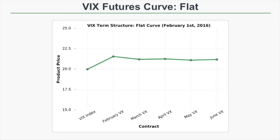In this last example we're looking at a VIX futures curve that is relatively flat. The VIX index is at 20, and from February through June the VIX futures contracts are around 21. While this is technically a contango curve since the VIX futures are higher than the VIX index, it is a relatively flat curve compared to what you would otherwise see.